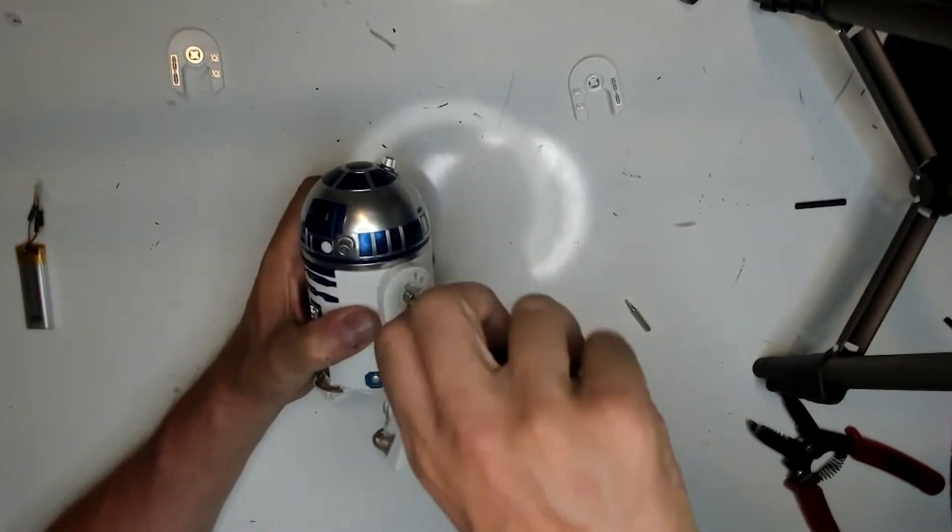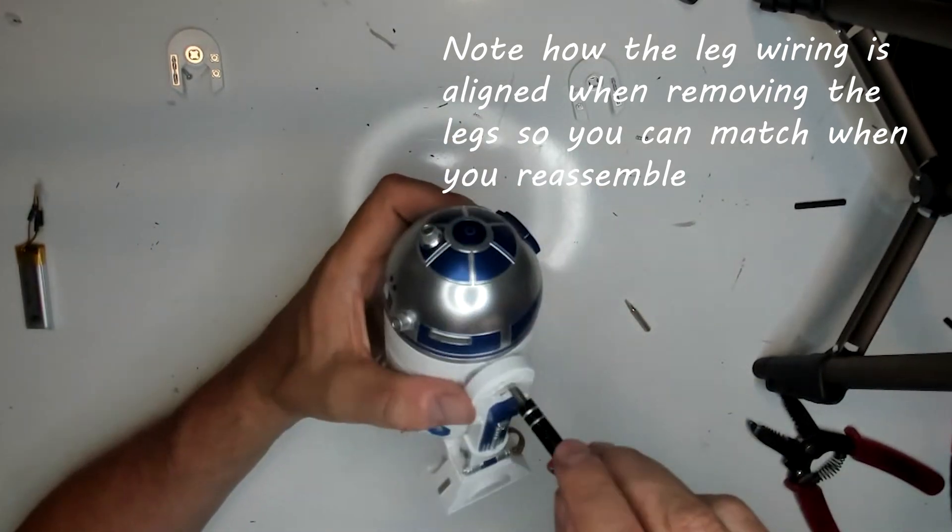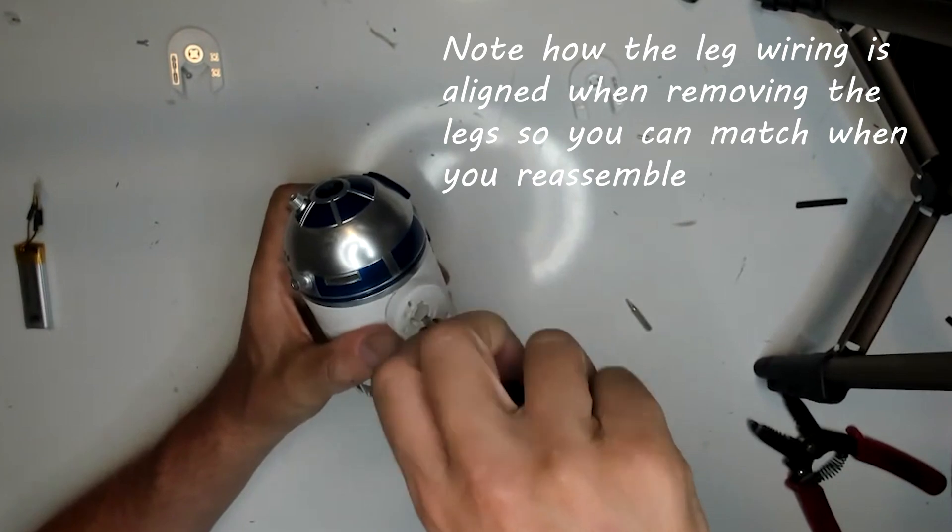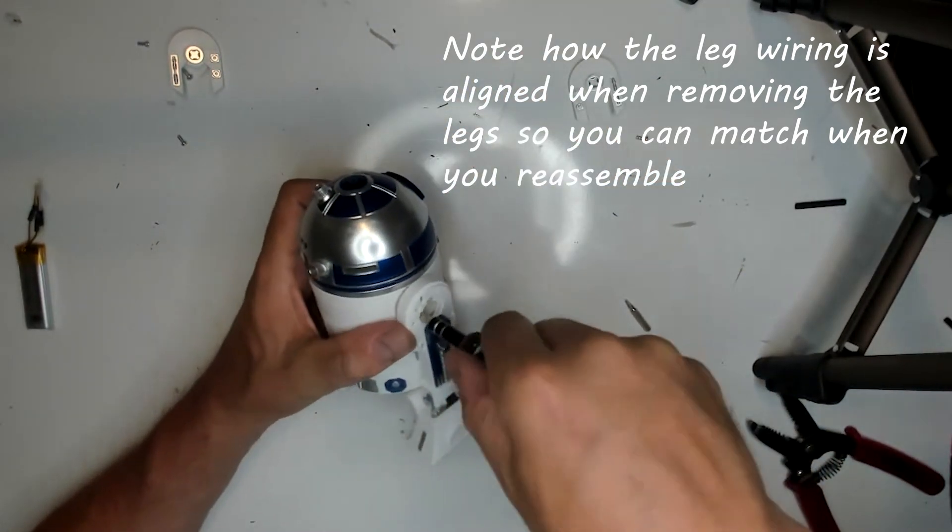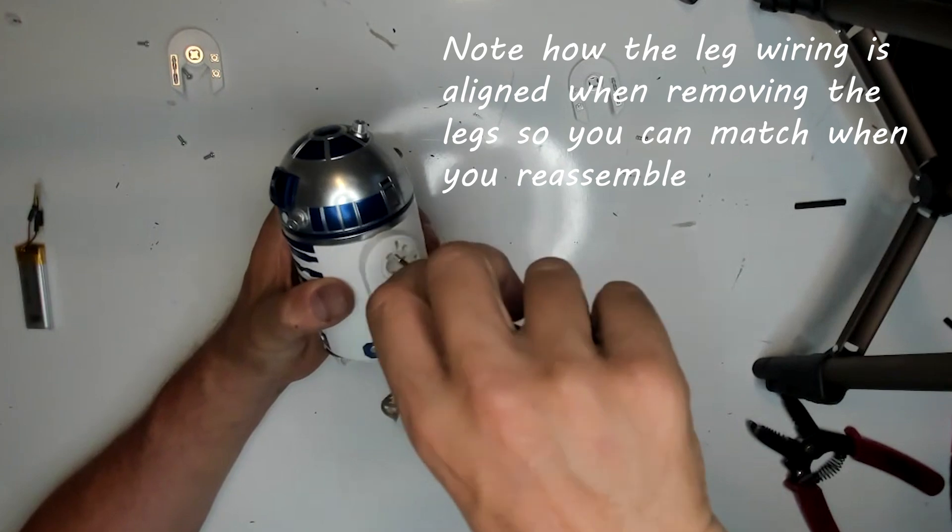There are four screws per leg—one large center screw, then three on the outside, and you do need to take out all four to loosen the legs. They just slide right off and just leave them dangling by the wires, there's nothing to unplug, and they'll be out of the way.